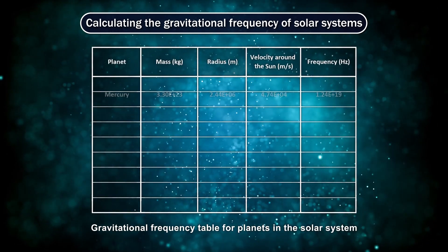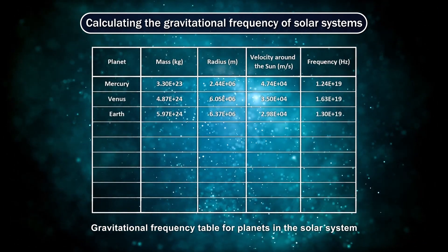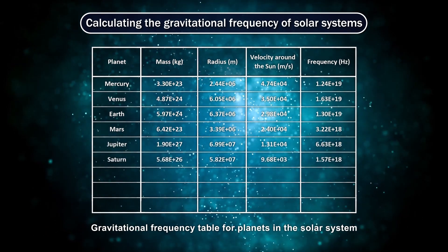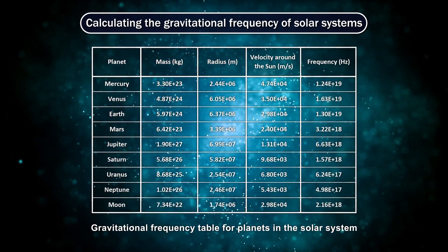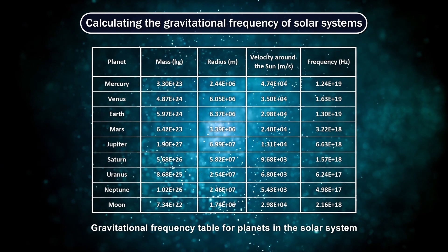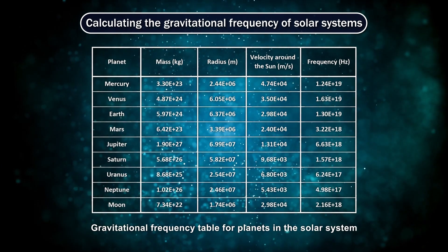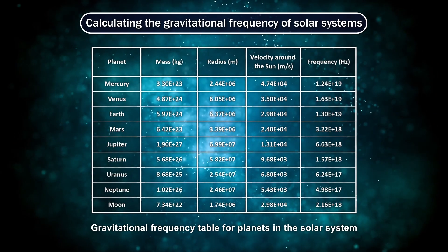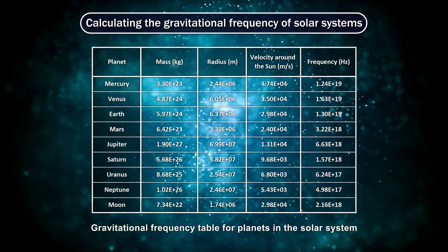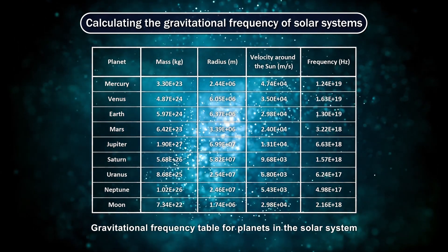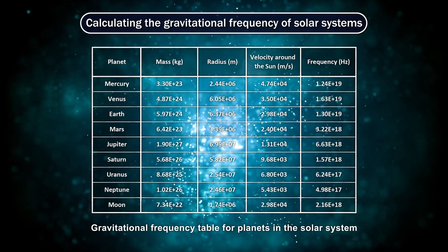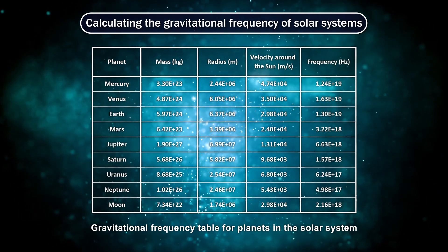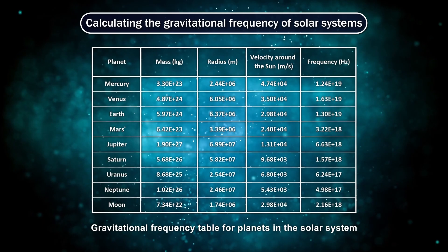The calculated amount of gravitational frequency between the Sun and the planets of the solar system should be as follows. Based on the calculations and obtained frequencies for gravitational fluxes, the electromagnetic spectrum chart can be considered as follows.